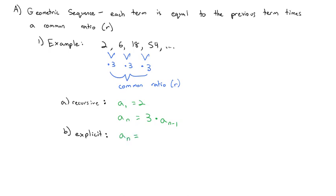The explicit formula says: if we're multiplying by 3 over and over again, that's like taking 3 raised to an exponent. But because we start with the first term rather than the zeroth term, we're going to have to use n minus 1. If I plug in n equals 2, that gives me 3 to the 2 minus 1, which is 3. But the second term is actually 6, so we multiply by the first term: 2 times 3 to the n minus 1, which does equal 6.